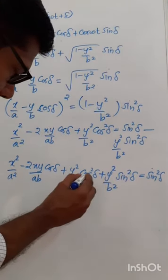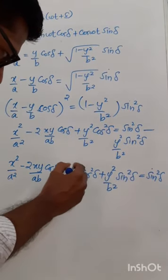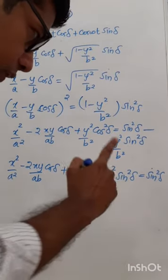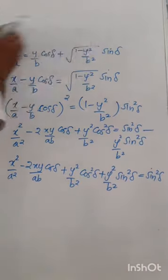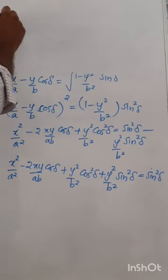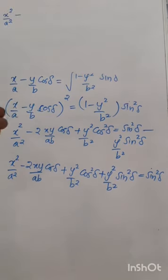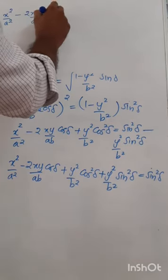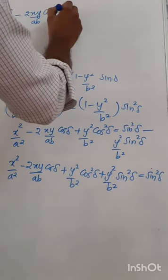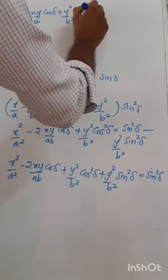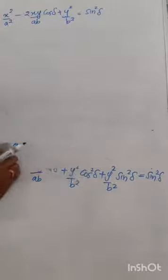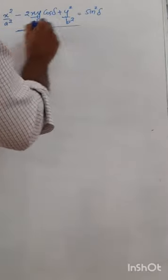Since y²/b² cos²(delta) + y²/b² sin²(delta) = y²/b² [cos²(delta) + sin²(delta)] = y²/b², the equation simplifies to: x²/a² - 2xy/(ab) cos(delta) + y²/b² = sin²(delta). This equation represents the general equation for an ellipse.